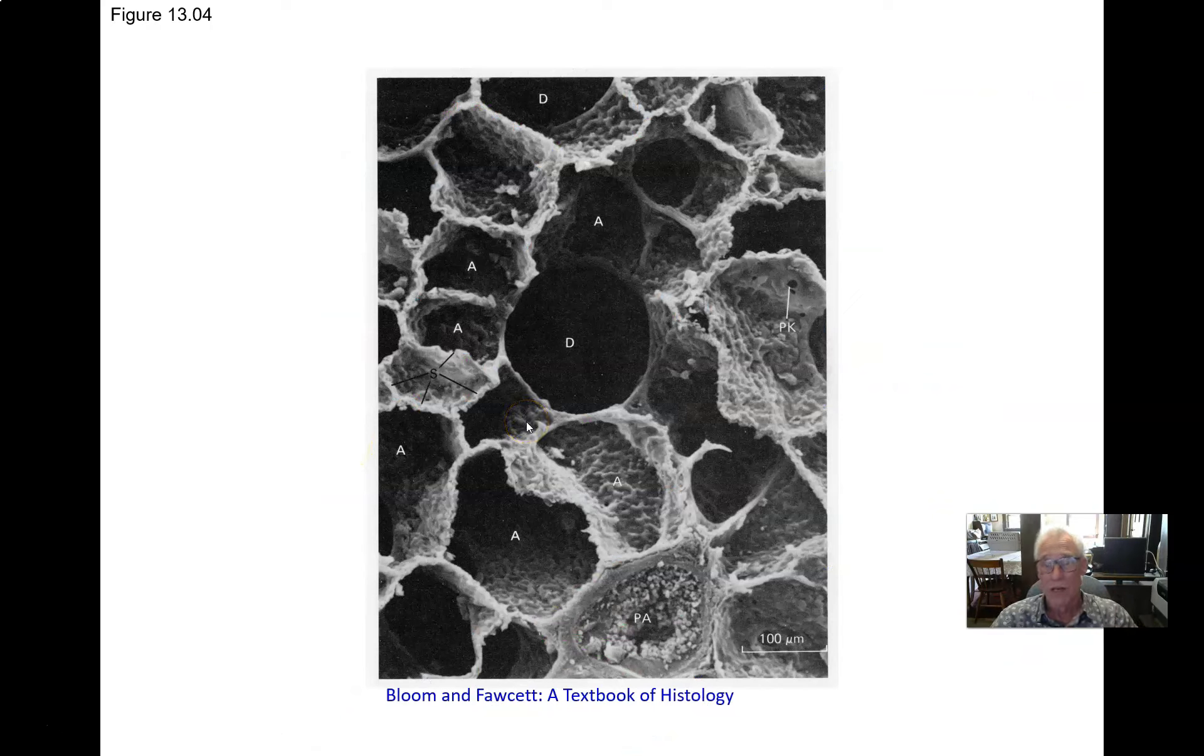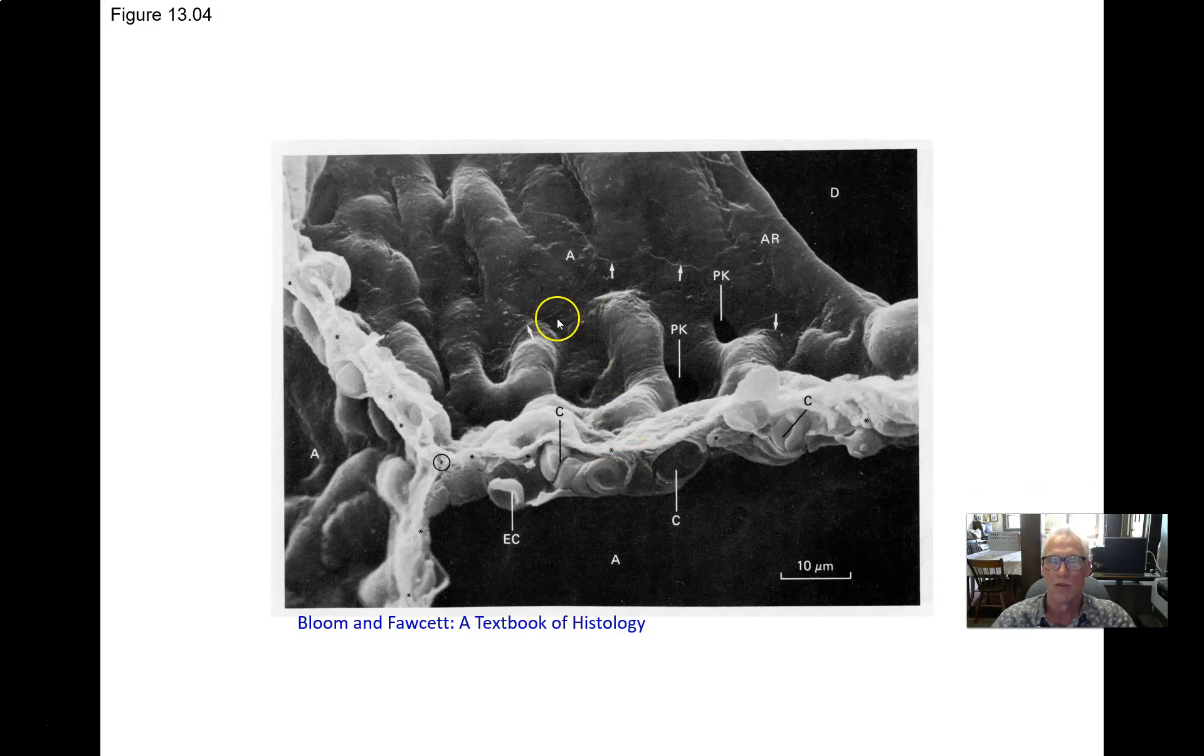Here's a nice electron micrograph of some alveoli cut in section. We can see the openings to these sphere-like structures. You can see how ultra-thin the wall is. All these ripples you see on the wall of the alveolus are the capillaries in the wall. Those type 1 alveolar cells are just draped over them so thin you almost can't even tell that they're there to give that ultra-short distance for diffusion of oxygen and CO2.